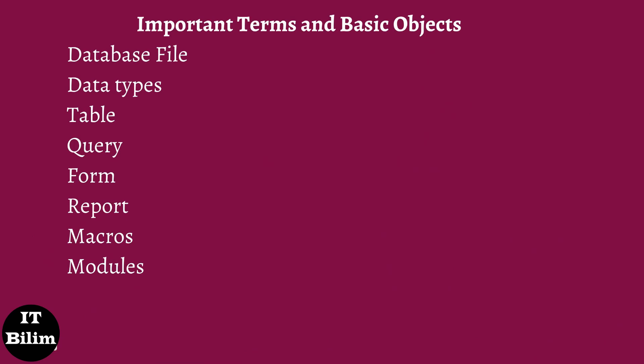Every field has one data type, like text, number, date, etc. Table: a table is an object which stores data in row and column format. A table is usually related to other tables in the database file. Each column must have a unique name. We can also define a primary key in a table.